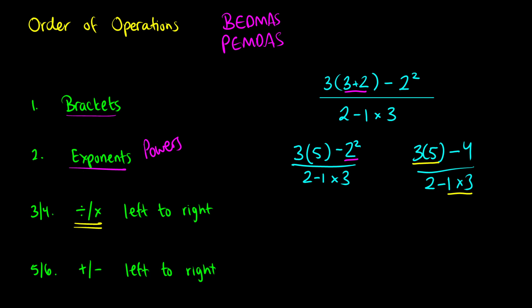This is where things can get confusing — you see this on social media all the time: what is the answer to 2 minus 1 times 4? People argue whether you do 2 minus 1 first or 1 times 4 first. You do multiplication first. So 3 times 5 is 15, and we subtract 4 on top. On the bottom, we do 1 times 3 first, giving us 2 minus 3.